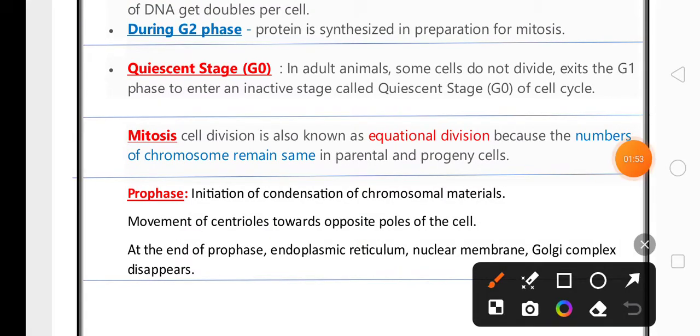One mark very important is quiescent stage or G0 stage. In adult animals, some cells do not divide. So they exit G1 phase and enter an inactive stage called quiescent stage of cell cycle.